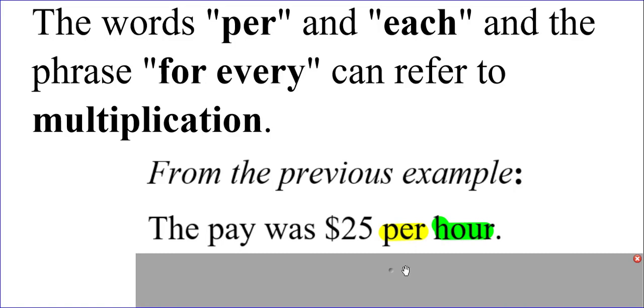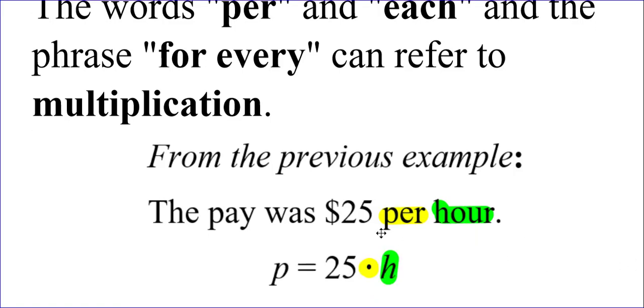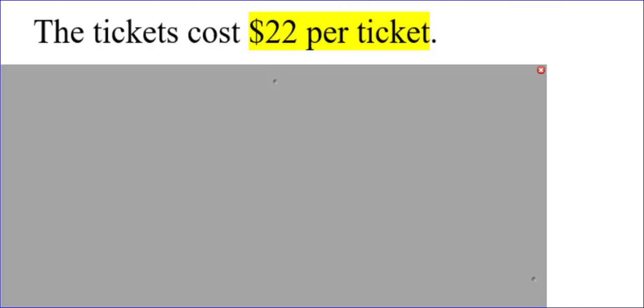This ties into how we do the equation. From the first example where the graph showed $25 per hour as the unit rate: per hour means times the hours. So 25 per hour means 25 times the hours. Call the hours h. That's 25 times h. Since the pay was 25 per hour, we can say that the pay equals 25 times the hours.